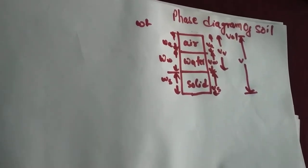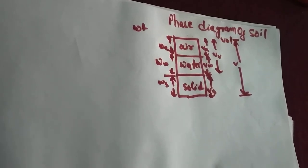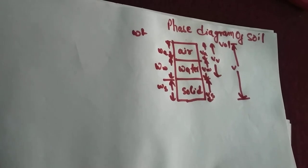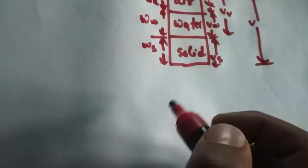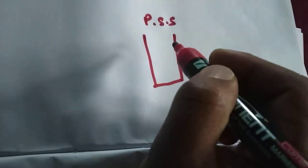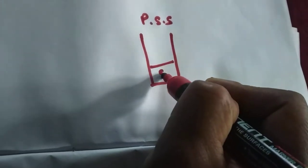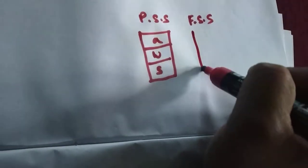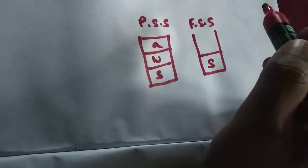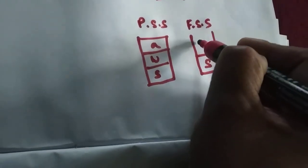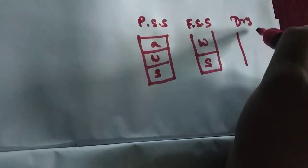We all know that soil can be classified as partially saturated soil, fully saturated soil, and perfectly dry soil. Let's understand this by diagram. Partially saturated soil means both water and air are present. In fully saturated soil, there will be no air - only water is present. In dry soil, only air is present.